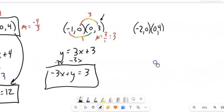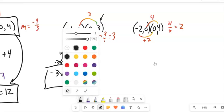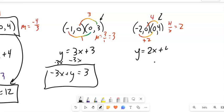And I end up with negative 3x plus y equals 3. All right, let's do this one. My slope up 4, up 2. So my slope is 4 over 2, which is 2.